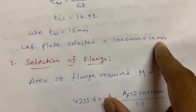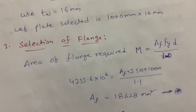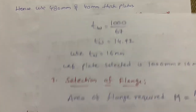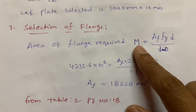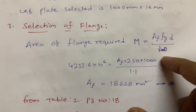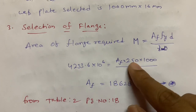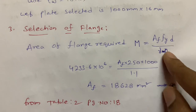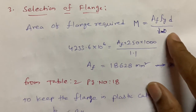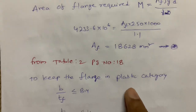After selecting the web plate, we select the flange. The I-section has a web portion and two flanges. The formula for flange selection is M = AF × Fy × D / γM0, where AF is the required area of the flange, Fy = 250 MPa, D = 1000 mm, and γM0 = 1.1 (partial safety factor from IS 800:2007 Table 5, page 30). Solving, AF = 186,028 mm².